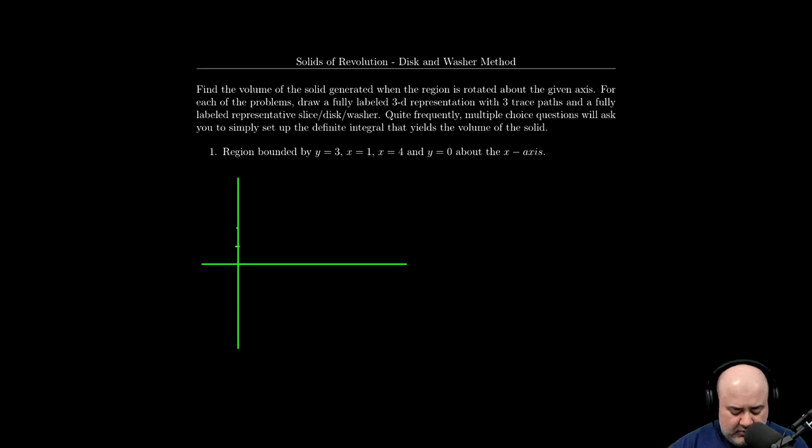And here now we want to be as precise as possible. So one, two, three, negative one, negative two, negative three, one, two, three, four. So this is one, this is four, this is three, this is negative three.